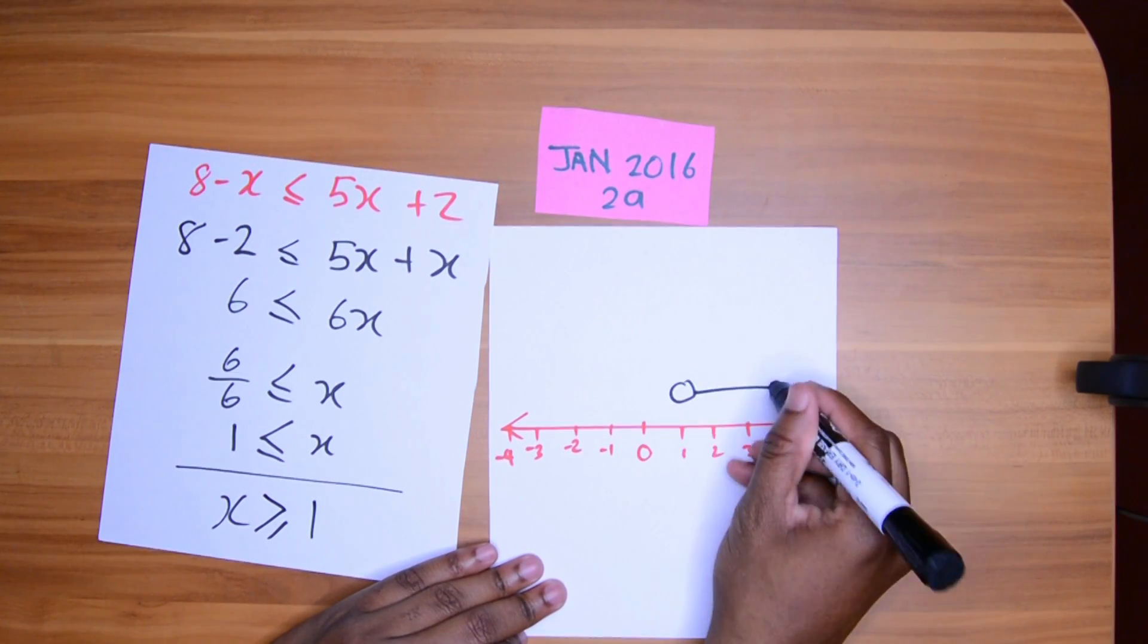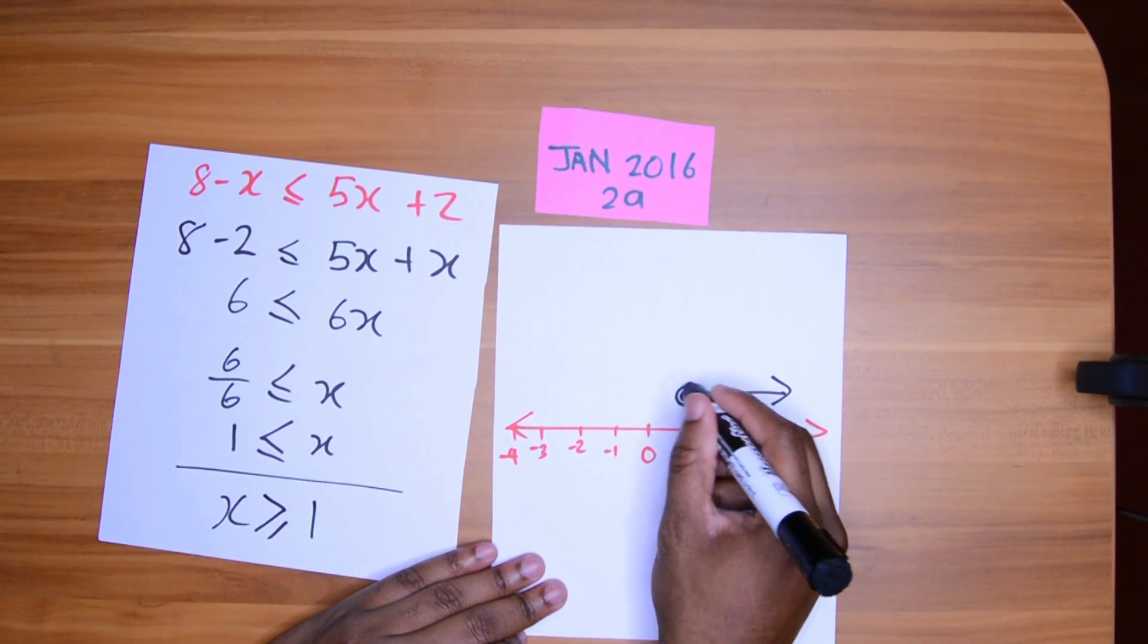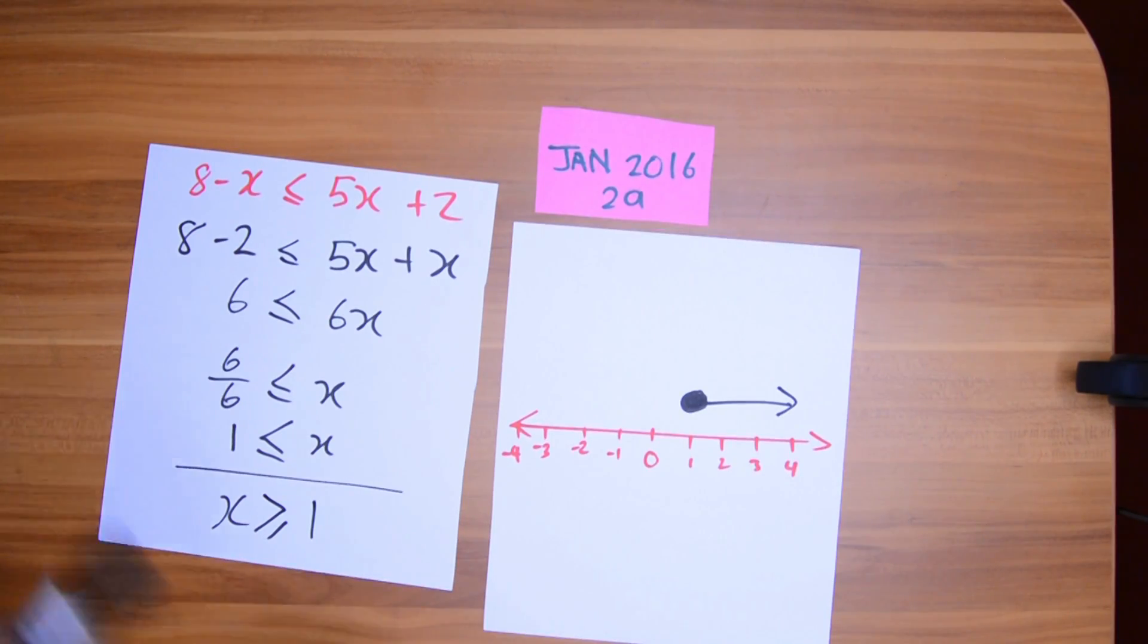Here's 1. This way is greater. Equal to means shade. 3 marks. Fun, right?